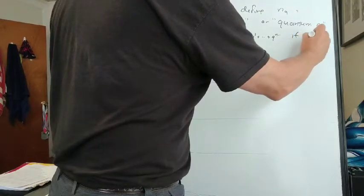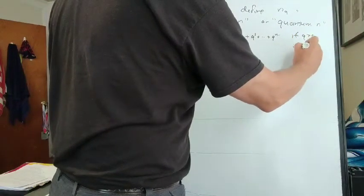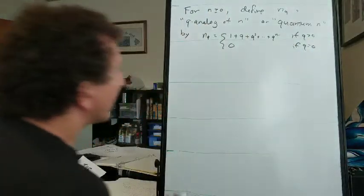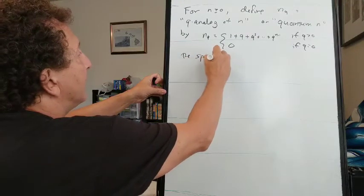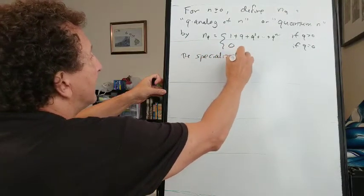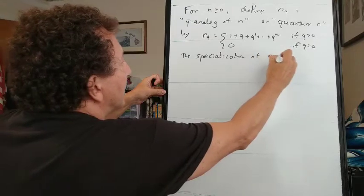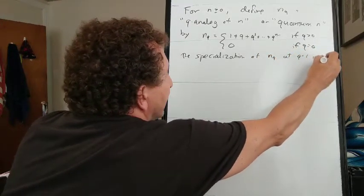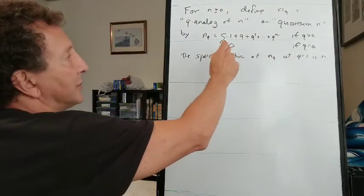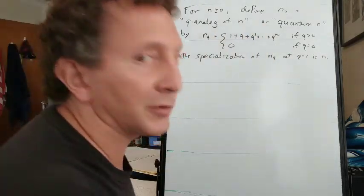If n is positive, it's just defined to be 0 if q equals 0. So the specialization of quantum n at q equals 1 is just n, because we're taking a sum of 1s if q is just 1.